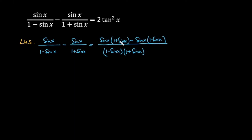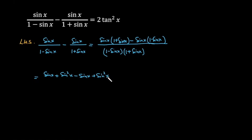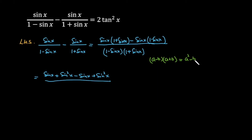In the next step I am going to open the brackets. The numerator expands to sin x plus sin squared x minus sin x plus sin squared x. The denominator is 1 minus sin x times 1 plus sin x, which by the formula (a minus b)(a plus b) equals a squared minus b squared.